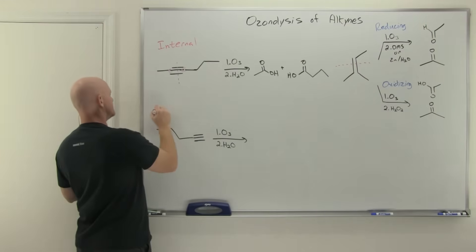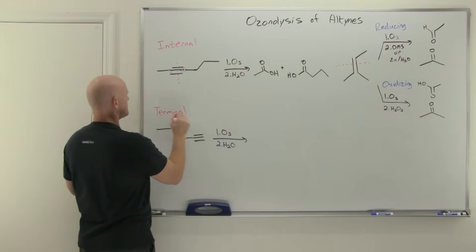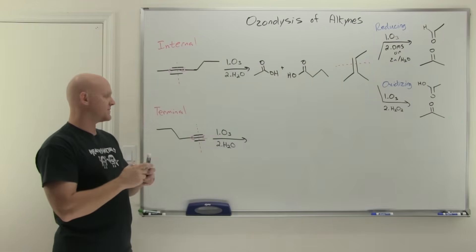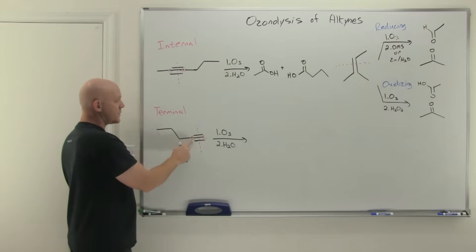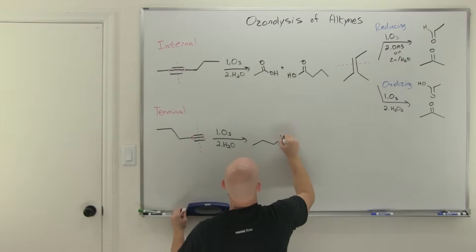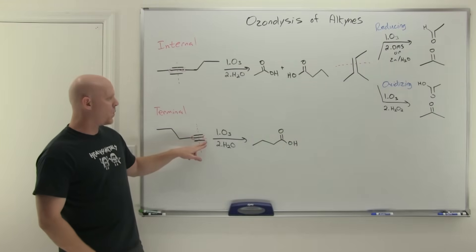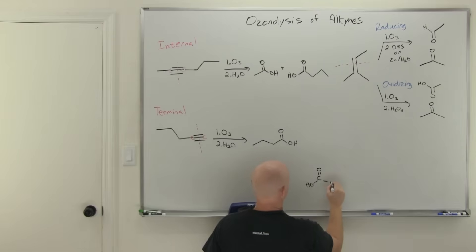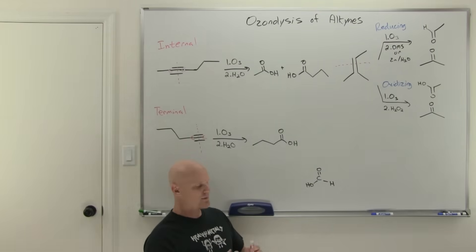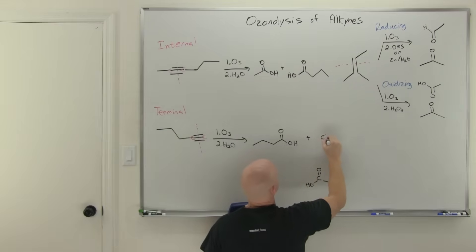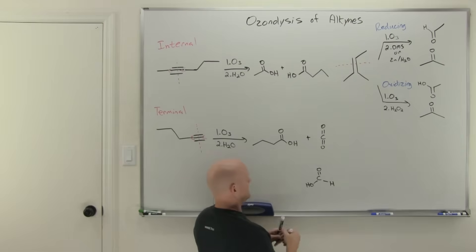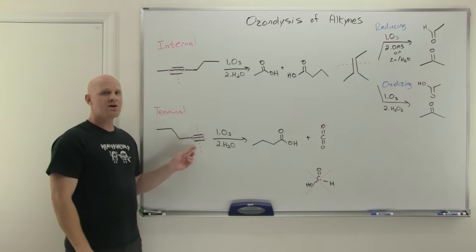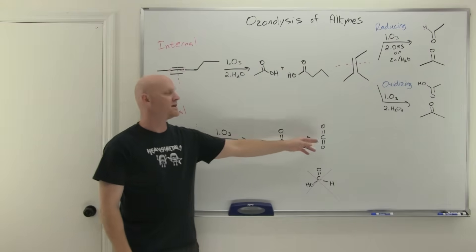What happens when you have a terminal alkyne is going to be a little bit different. We're still going to cleave that carbon-carbon triple bond, and both carbons initially turn into carboxylic acids. On the left-hand side we get a four-carbon carboxylic acid. But on the other side we have just that one carbon, and a one-carbon carboxylic acid is formic acid. Under these conditions, formic acid is not the most stable thing and continues getting oxidized one step further until it turns into carbon dioxide. So formic acid is not one of our products — we predict carbon dioxide instead. For a terminal alkyne, instead of getting two carboxylic acids, you get one carboxylic acid and carbon dioxide.